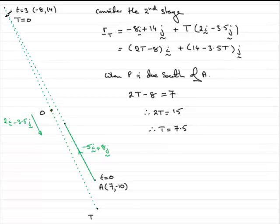7.5 seconds later, after leaving here, the particle is down here. So that means that the total time taken after leaving A is going to be 3 seconds up this stage plus 7.5 more seconds, a total of 10.5 seconds.